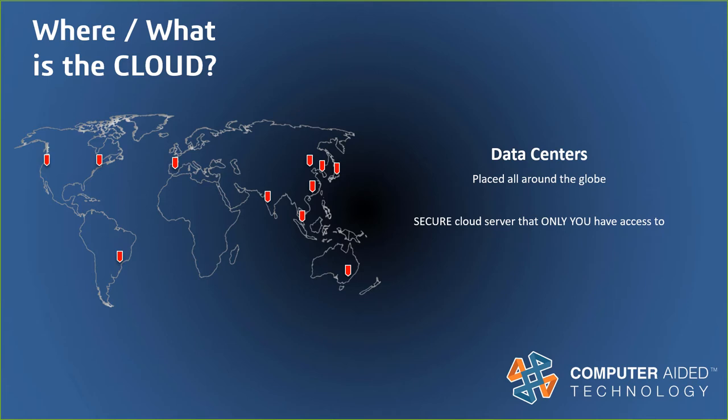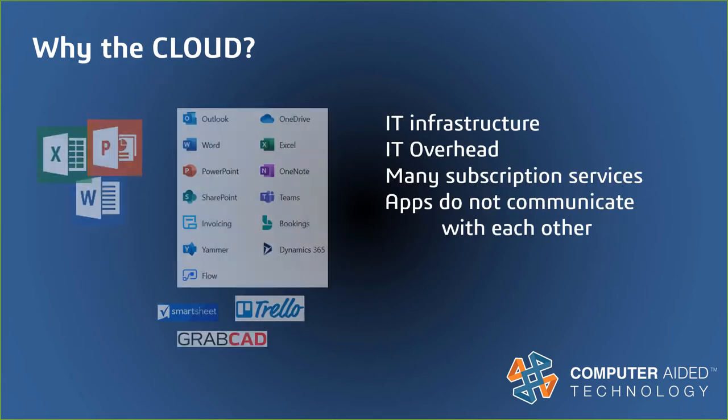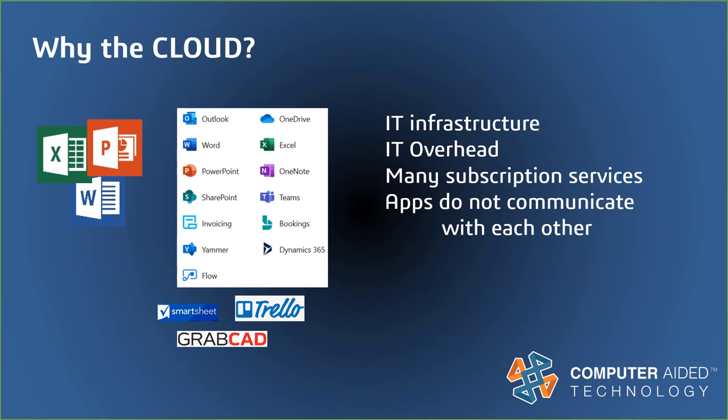One way to make sure everyone in your company is connected is to get your information on the cloud. On the simplest level, the 3D Experience Cloud is a collection of data centers placed all around the globe. Your data is stored on a secure cloud server that only you have access to. Right now, you may be using many different disconnected applications every day. Office 365 alone has more than 15 applications. You're probably paying subscriptions to many of these companies with fairly large IT commitment and server requirements, and most likely there's no communication between these apps.